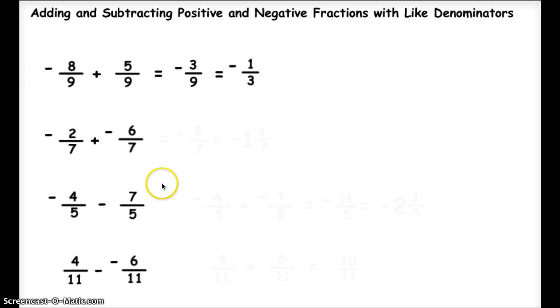Let's look at the next one. I have negative 2 sevenths plus negative 6 sevenths. So they already have a common denominator. So I ask myself, do they work together or against each other? In this case, they work together since they're both negative.